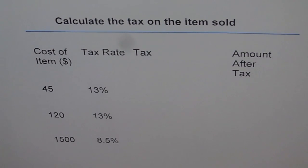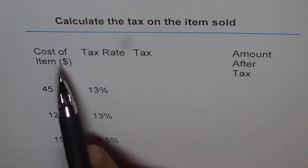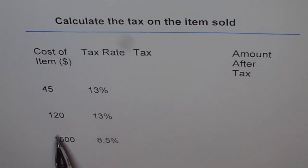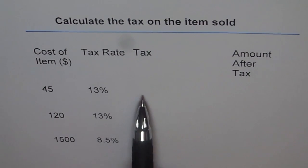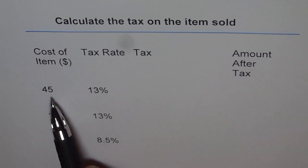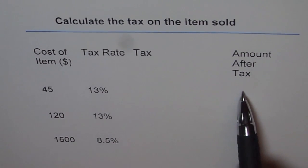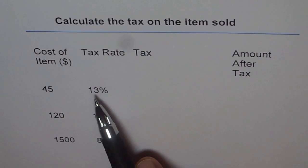Now, here we have a table. This table has cost of items. This cost is in dollars. Let's say the item A costs 45 dollars and the tax rate is 13%. You need to calculate what is the tax amount, and then tax amount gets added to your original amount and then you have to pay for both tax and the original amounts.